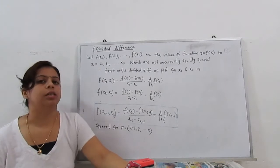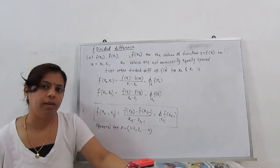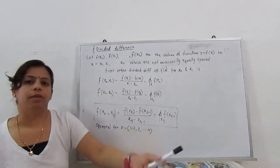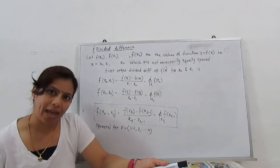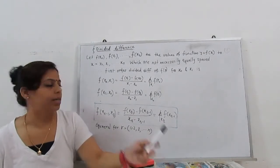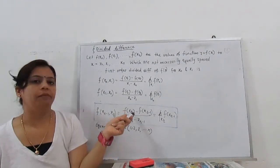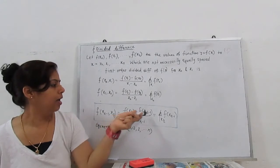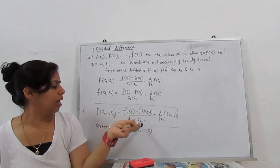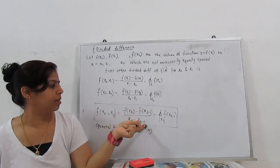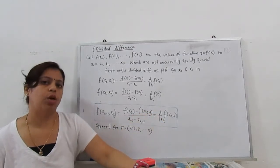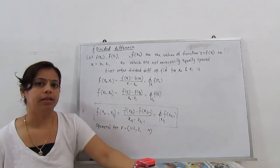Now if we want to find the first-order divided difference at points x1 and x2, it is (f(x2) - f(x1)) / (x2 - x1), written as the divided difference operator f[x1, x2]. The general formula, for r going from 1, 2, 3 to n, is f[x_{r-1}, x_r] = (f(x_r) - f(x_{r-1})) / (x_r - x_{r-1}). This is the first-order divided difference formula.